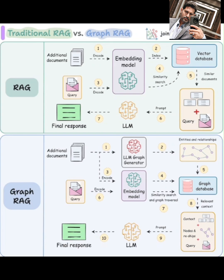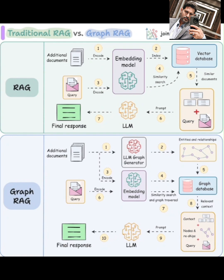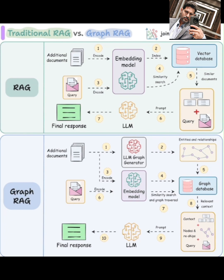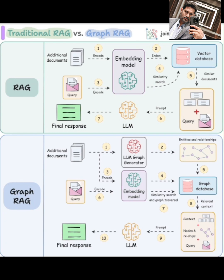First up, let's look at traditional RAG. Think of this as giving the LLM a stack of relevant documents. We have additional documents that we want our LLM to know about. These documents are encoded into numerical representations called embeddings using an embedding model. These embeddings are then indexed and stored in a vector database, which is like a special library optimized for finding similar pieces of information.